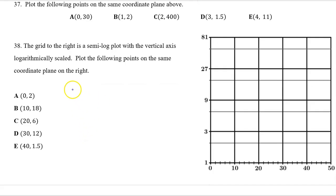Number 38 is the same type of thing. The grid to the right is a semi-log plot with the vertical axis logarithmically scaled. Plot the following points on the same coordinate plane on the right. I think it will help if we label these lines in between the numbers. Obviously between 1 and 3, there's going to be a 2. And yeah, this line is the 2, even though it is closer to the 3 than the 1. That's how a semi-log graph is.